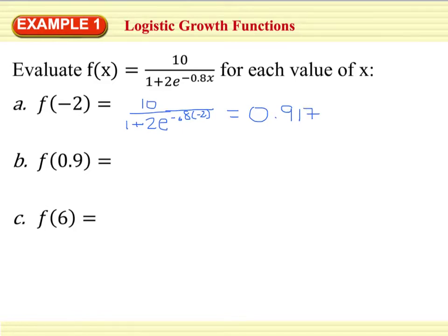Likewise, for part b, we're going to end up evaluating the function at f of 0.9. So we end up with 10 divided by 1 plus 2e to the negative 0.8 times 0.9. And when you type that in, you should get something around 5.07.